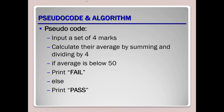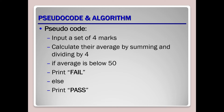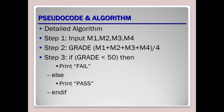Now we write simple pseudocode statements. First, input a set of four marks — we ask for the student's marks in four subjects. Then we calculate the average by summing all four marks and dividing by four. Then we compare: if the average of marks is below 50, then the student fails; otherwise the student passes. We have now converted this problem into simple pseudocode steps.